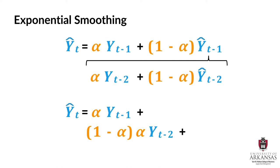Now we can see that for any value of alpha between 0 and 1, the weight we apply to period t minus 2 will be lower than the weight we apply to period t minus 1. And the same logic will extend to more distant past demand observations.